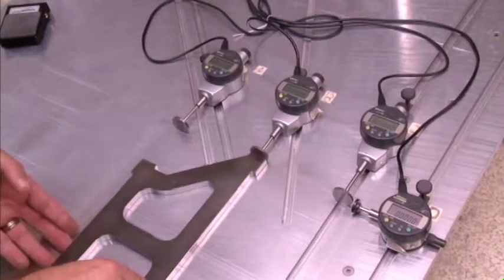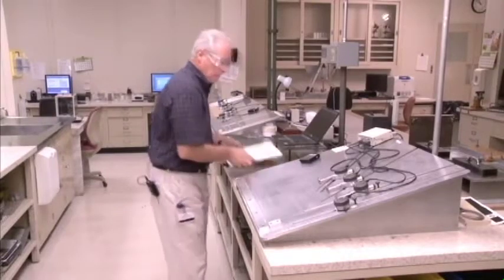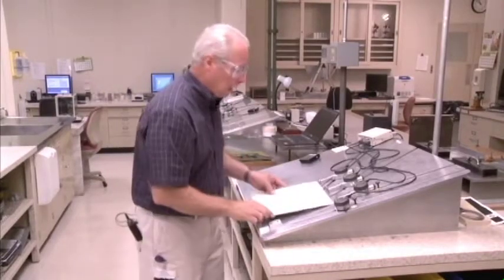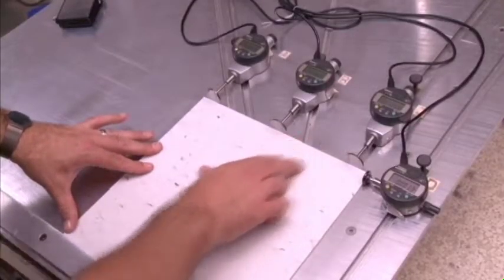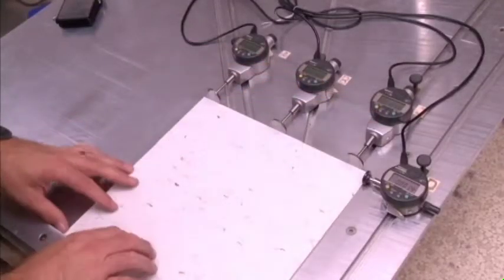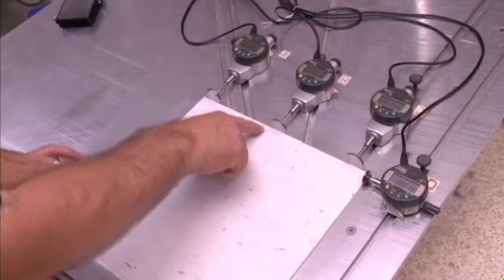When you finish that, you then install the tile, make sure that it's properly seated against the indexing strips, and now you can read all four gauges for the tile's deviation from 12 inches.